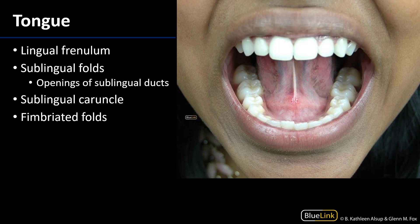The lingual frenulum is midline and is flanked laterally by two sublingual folds. The sublingual folds are the mucosae invested about the sublingual glands. There are openings all along these sublingual folds for the sublingual glands. Where the sublingual folds meet the lingual frenulum is a region known as the sublingual caruncle.